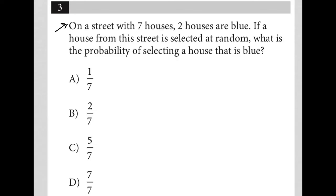So this question says, on a street with seven houses, two houses are blue. So I'm going to just write this down. Seven houses, out of those seven, two equal blue.